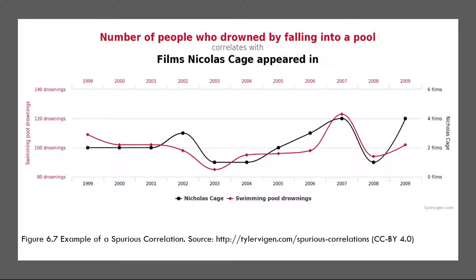There are various ways that researchers address the directionality and third variable problems. The most effective is to conduct an experiment. For example, instead of simply measuring how much people exercise, a researcher could bring people into a laboratory and randomly assign half of them to run on a treadmill for 15 minutes and the rest to sit on the couch for 15 minutes. If the exercisers end up in more positive moods, it can't be because their moods affected how much they exercised — the researcher used random assignment to determine that. Likewise, it can't be because of some third variable like physical health. Thus, experiments eliminate the directionality and third variable problems and allow researchers to draw firm conclusions about causal relationships.